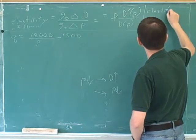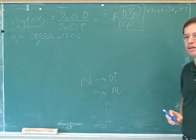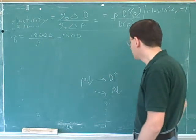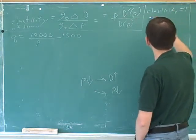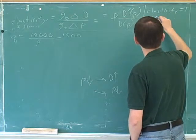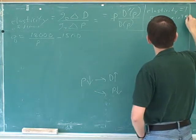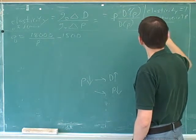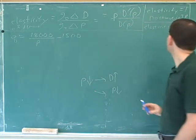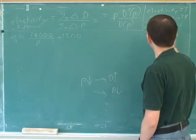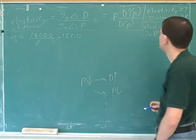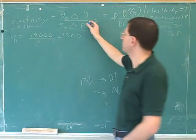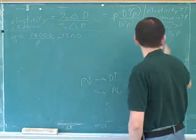So if you have an elasticity of one, what does that mean? It means that the demand is changing by the same percentage as the price. So what's going to happen to your total revenue? Yeah, it doesn't change because the price goes up and the demand goes down. Now, suppose the elasticity is greater than one, then who's changing more, the demand or the price? The demand. Yeah. If this ratio is bigger than one, that must be because the numerator is bigger than the denominator.